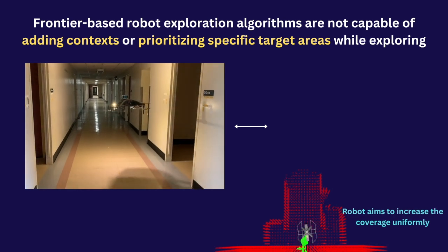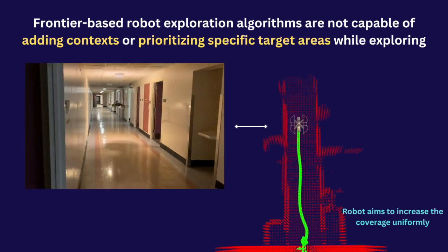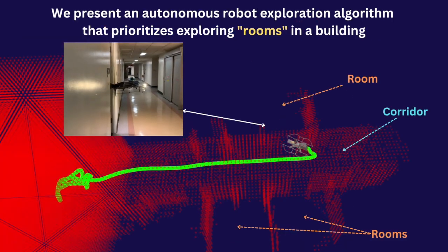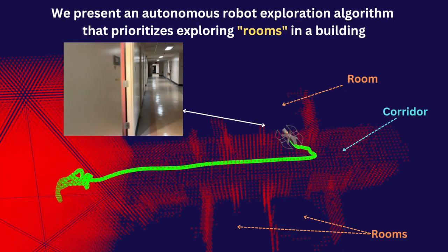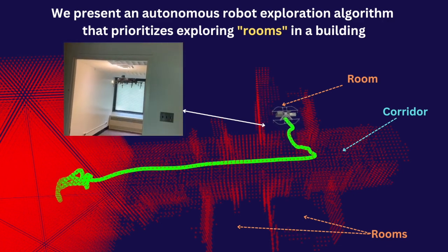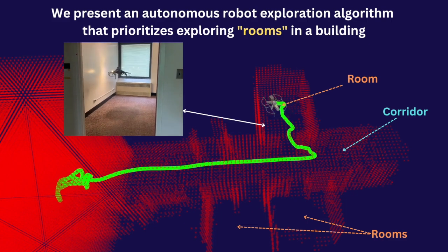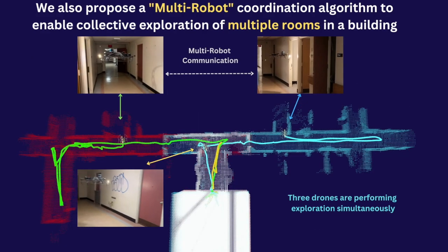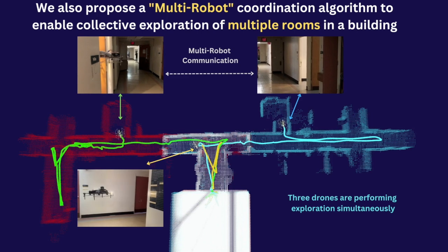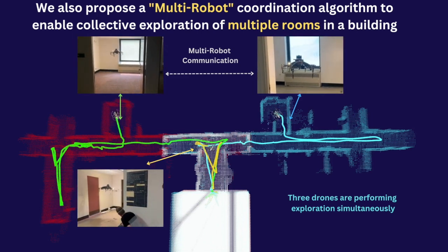Frontier-based exploration is not suitable for adding contexts or prioritizing specific target areas. We present an autonomous robot exploration pipeline that prioritizes exploring rooms in a building. We also propose a multi-robot coordination algorithm to enable collective exploration of multiple rooms in a building.